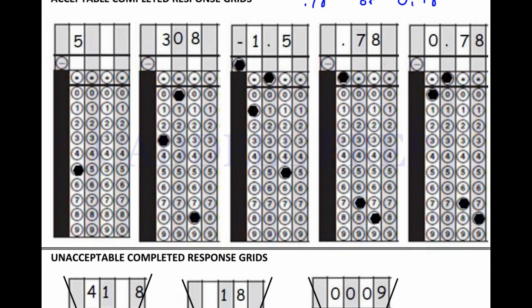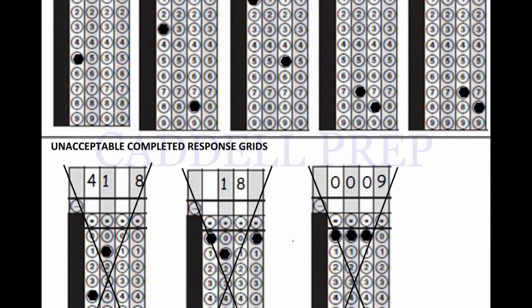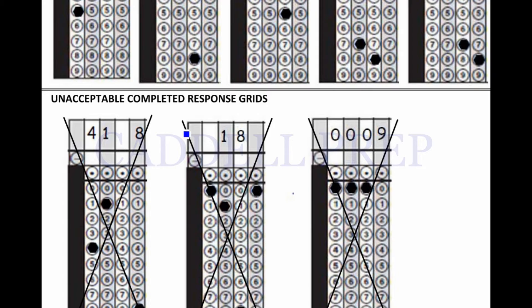Let's look at what not to do. So, we always want to start at the left, the first column, which this student did. But for 418, the student skipped a column. This 8 should be here and then this should be bubbled in down here. Do not skip.